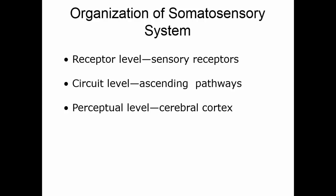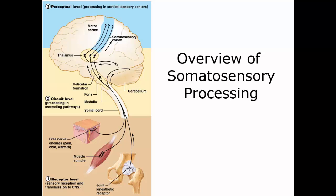The somatosensory system has three levels of organization: the receptor level, which is what you pick up with your sensory receptors; the circuit level, which are the neurons that ascend up the spinal cord; and the perceptual level, which is in the cerebral cortex. A first-order sensory neuron takes information to the central nervous system. A second-order sensory neuron takes that up the spinal cord to the thalamus, and sometimes to the cerebellum. A third-order sensory neuron takes it onto the cerebral cortex. The ones that go to the cerebellum you typically don't perceive.